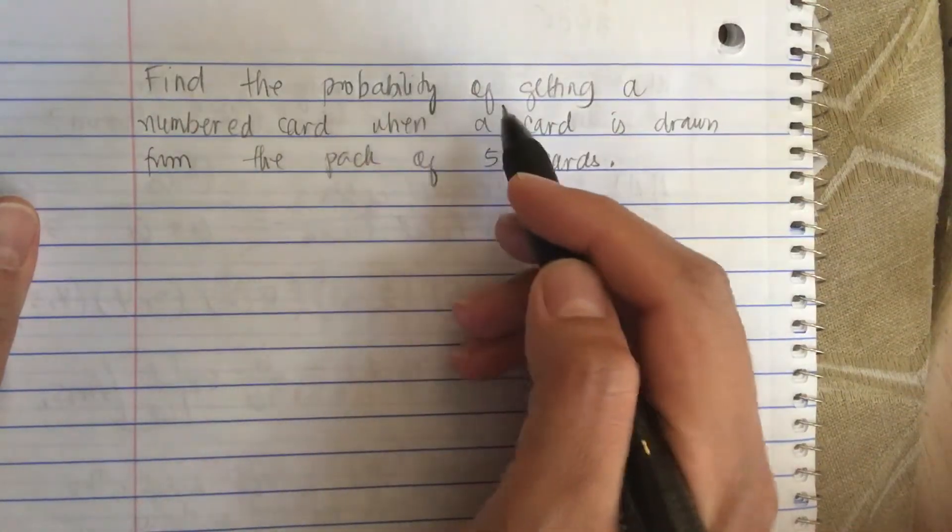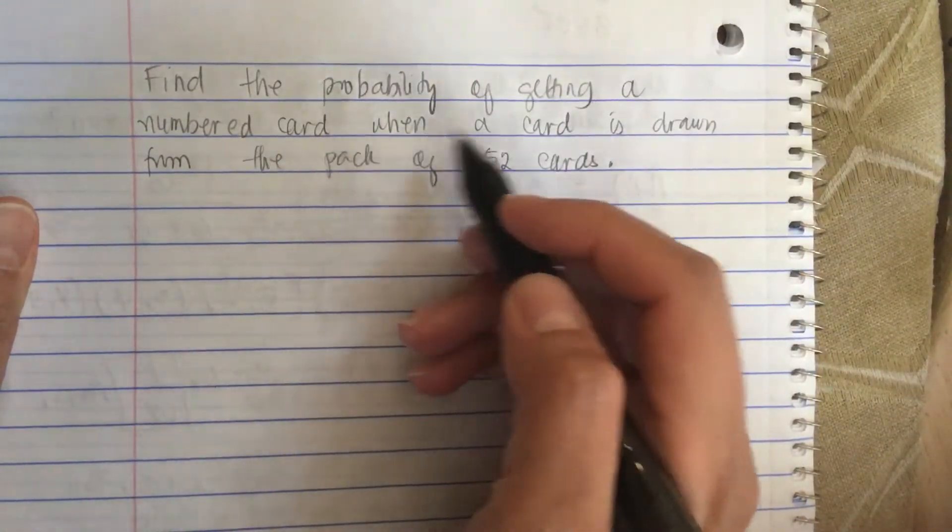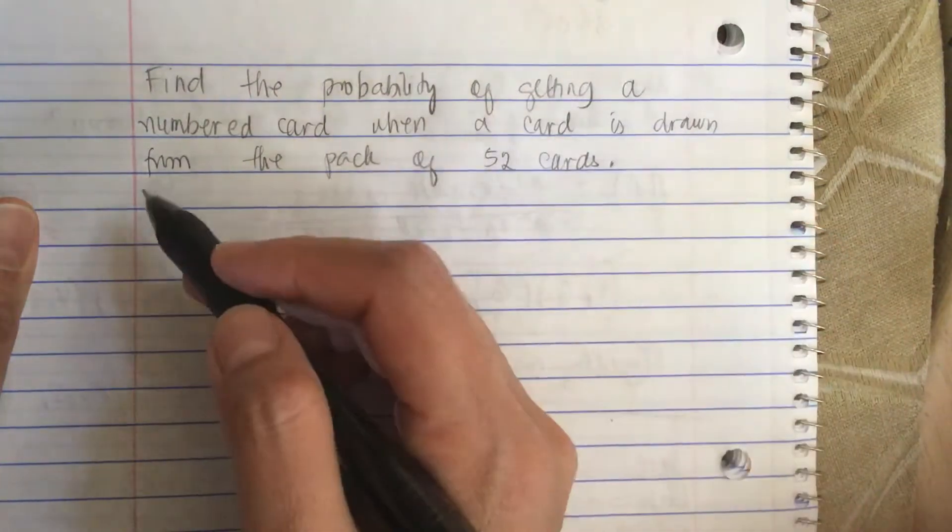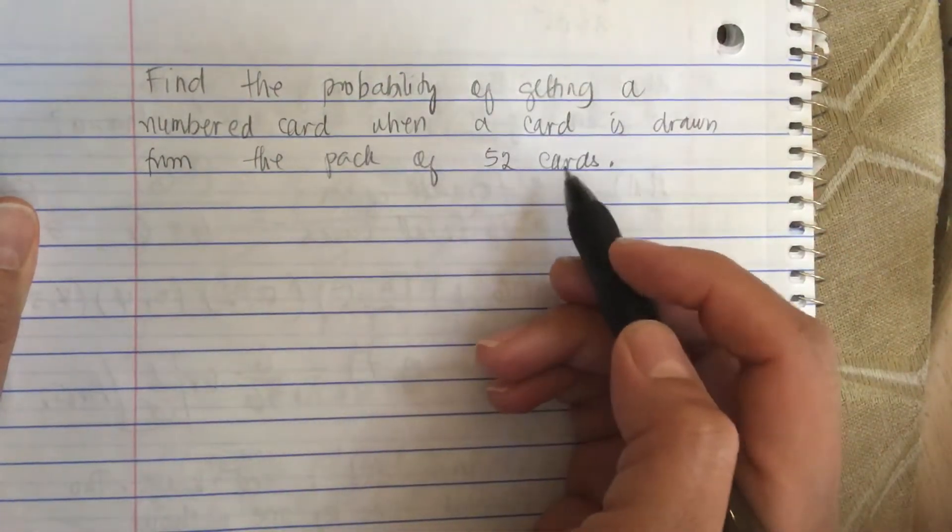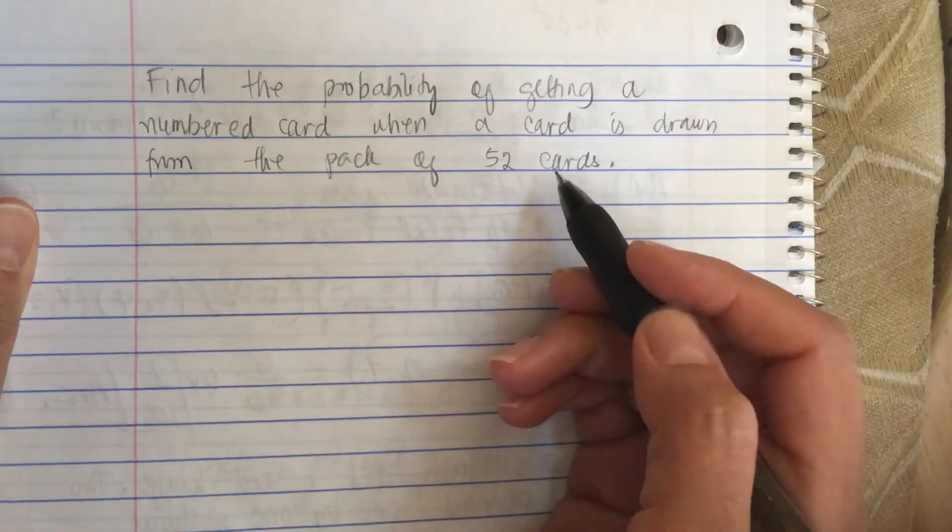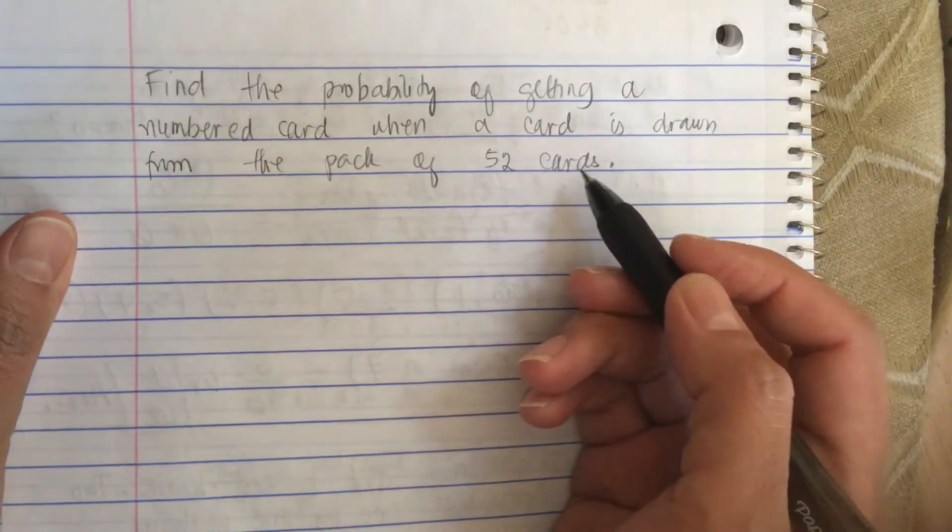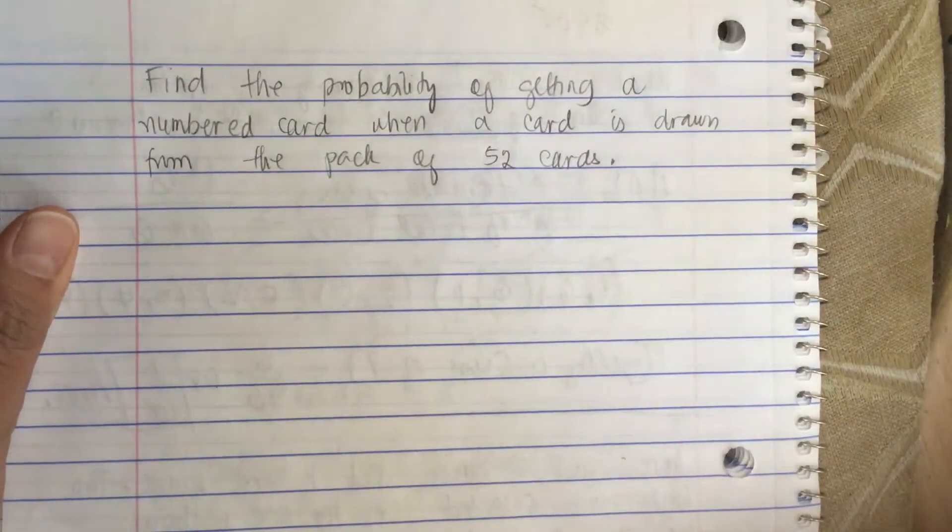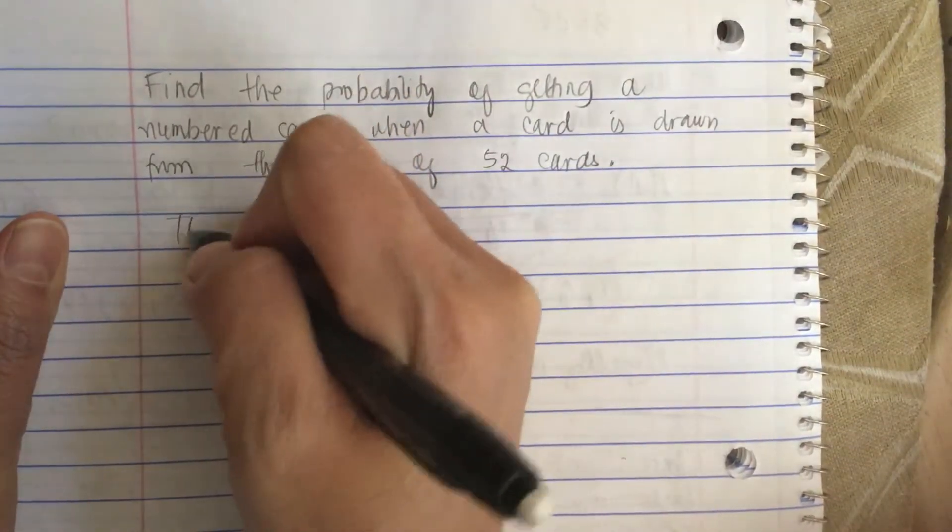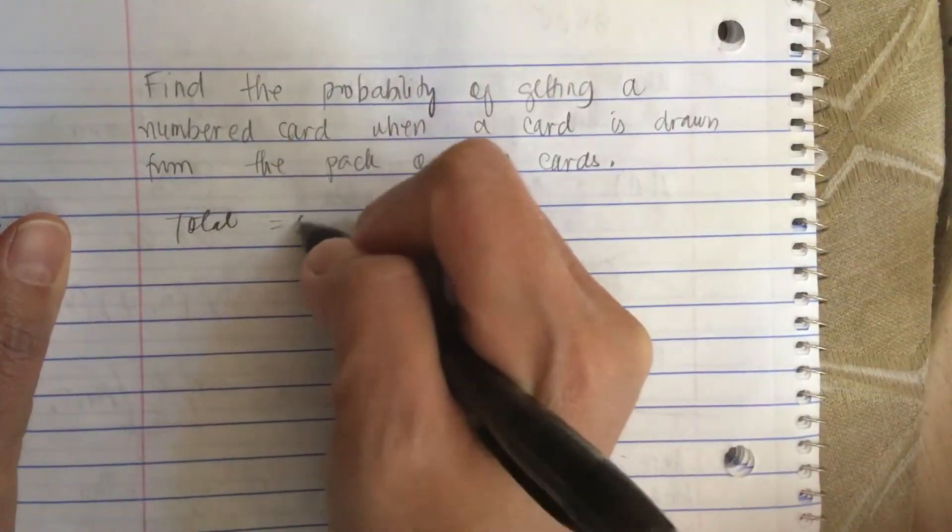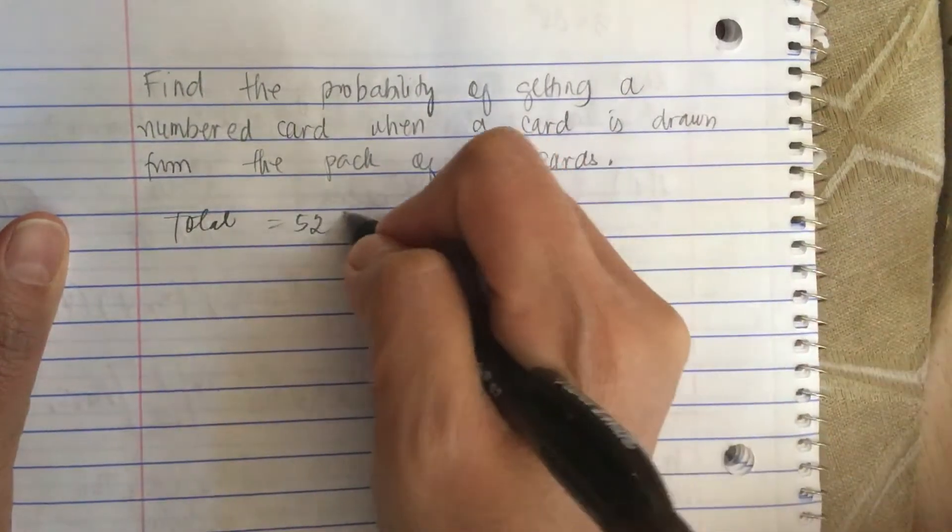Find the probability of getting a numbered card when a card is drawn from the pack of 52 cards. So there are 52 total cards, and total is equal to 52 cards.